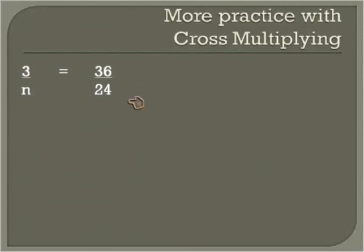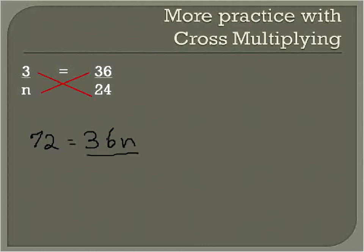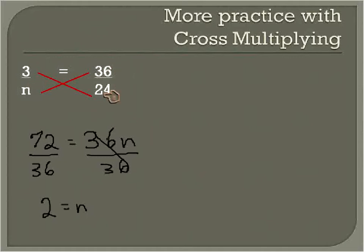The next one, just to show a little more practice — in this one I've moved the variable to the bottom, but it's the same type of question. We'll use cross multiplication again, multiplying n times 36 and 24 times 3. 24 times 3 is 72, and 36 times n is 36n. To solve for n, we divide both sides of the equation by 36. Those cancel each other out, and n is equal to 2 — since 72 divided by 36 is 2. So 3 over 2 equals 36 over 24. These are equivalent fractions, equivalent ratios — in other words, they're proportional to each other.